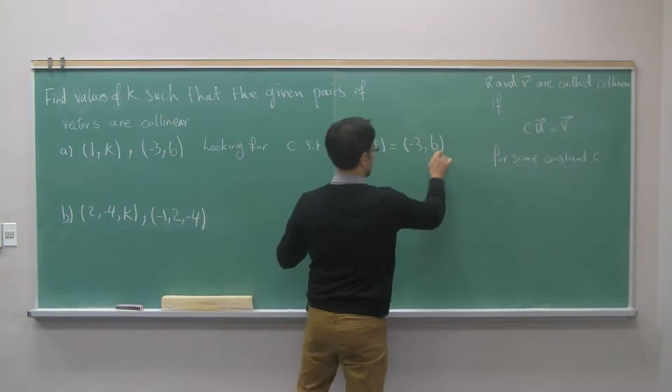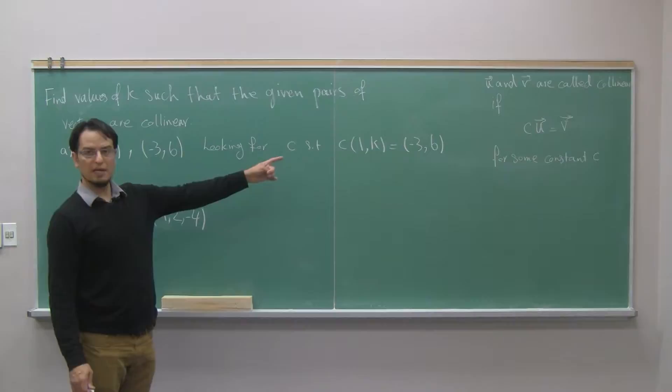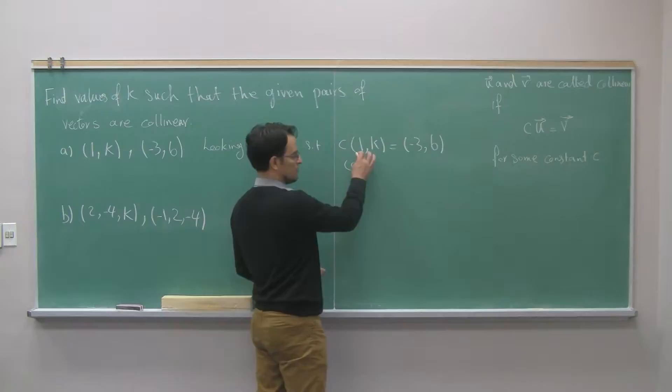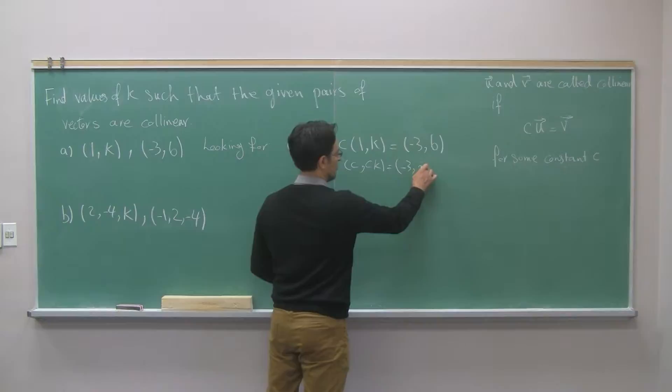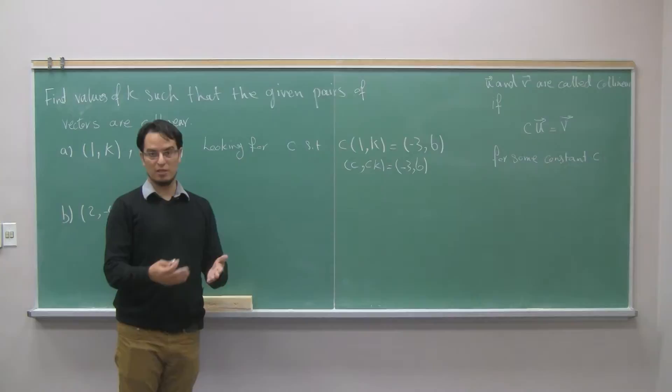c times a vector means that I have c times 1, which is c, c times k. And it is supposed to be equal to this. But two vectors are equal. That means that corresponding components are equal.